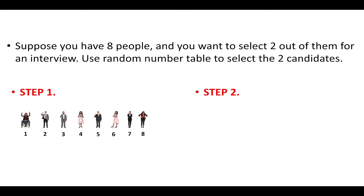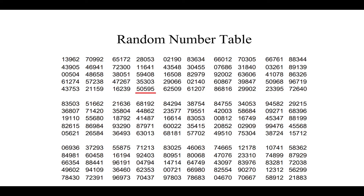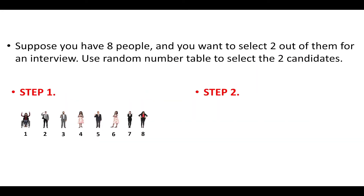In step 2, we go to the random number table and select any random number. Suppose we have selected 50595. Since we have labelled the persons with single digit numbers, we select one single digit at a time. The first single digit is 5, so we select the 5th person. The next digit is 0 — since no person is numbered 0, we reject it. The next digit is 5 again; as it has already been allotted, we reject it.